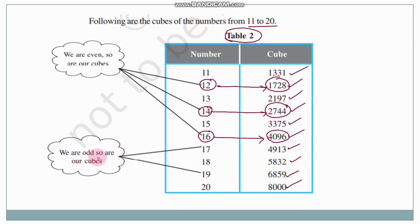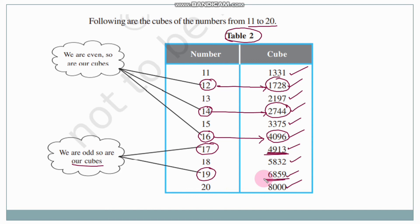So are our cubes — if a number is even, its cube is also even. If a number is odd, its cube is also odd. Remember this, children.